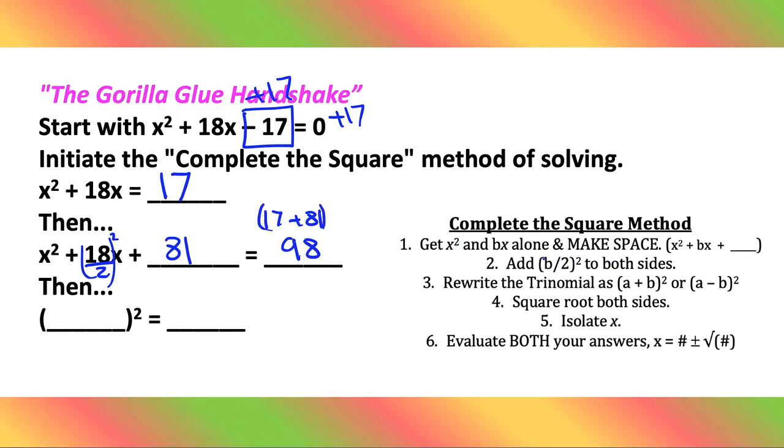So you would add and simplify. You would do step two and you know, add the b divided by two squared to both sides, but actually rewrite it as a number. Since there's only one blank, you want to write it as just one number.